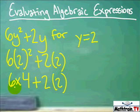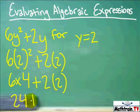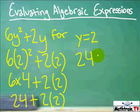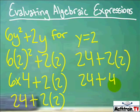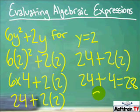parentheses 2. And 6 times 4 is 24, plus 2, and 2 times 2 is 4. So 24 plus 4 equals 28, and 28 is the answer.